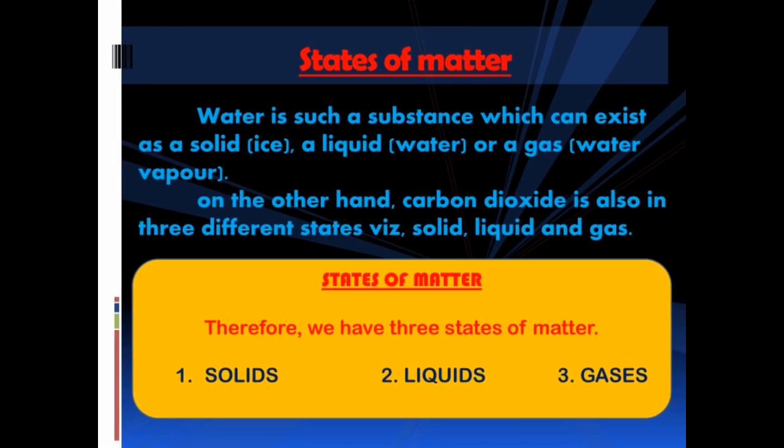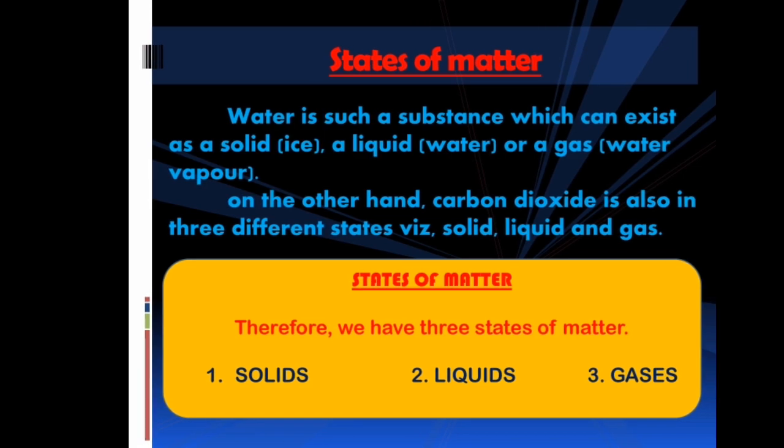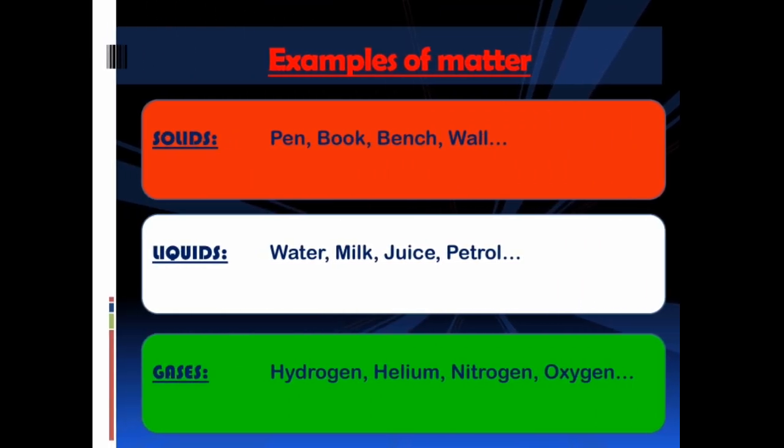Now, states of matter. Water is such a substance which can exist as a solid, a liquid or a gas. On the other hand, carbon dioxide is also in three different states: solid, liquid and gas. Therefore, we have three states of matter: solids, liquids and gases.